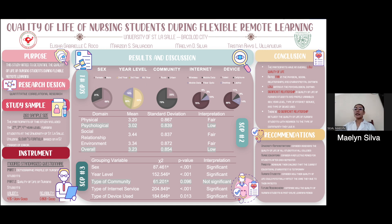To analyze the data for the second question, which assessed the respondents' level of quality of life, mean and standard deviation were used to analyze the responses. For the third question, which assessed whether there is a significant relationship between the level of quality of life of nursing students and profile variables, a chi-square test of independence was used.